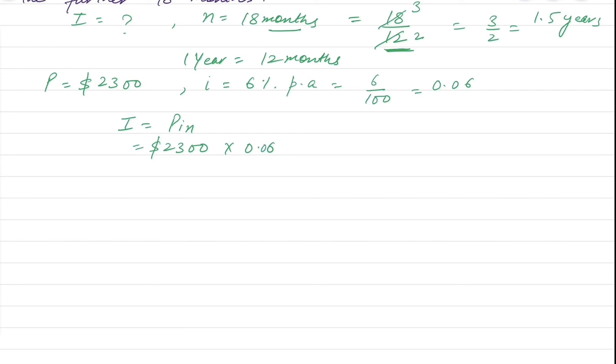$2,300 P times i 0.06 times N, which is 1.5 years, which we have calculated. After multiplying, we get $207.00 or $207 can be the answer as well. Now the total account balance. We know the formula A is equals to P plus I. P is the principal amount. I is the interest rate.